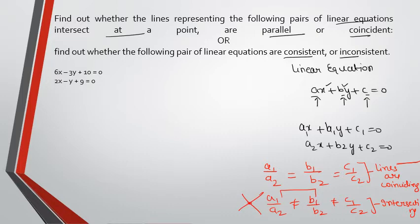Whereas if you have ratios where one is equal, like a1 upon a2 is equal to b1 upon b2, but it is not equal to c1 upon c2, then we can say lines are parallel.